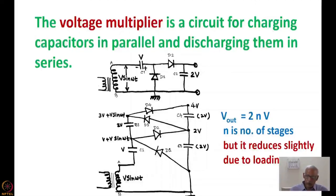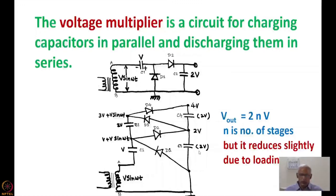The same thing you can see: when this is grounded and this is negative, then the charging of this capacitor will take place through this circuit. And when the reverse takes place, then this will charge through this capacitor, so this will be charged to twice. You can see that if you have N number of stages — each stage having two capacitors and two diodes — then if you have N number of units or N number of stages, the total voltage at the output on the top will be 2N times V, where N is the number of stages.